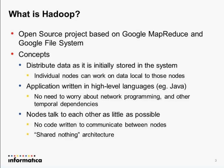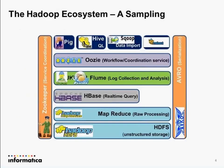Let's look at some of the different flavors of the Hadoop ecosystem. New Hadoop projects crop up periodically on the Apache Foundation website, but here are the more popular ones. At the base layer is HDFS for unstructured storage. On top of that, MapReduce handles raw processing. For real-time querying, there's HBase. For system management like collecting and analyzing log files, you have Chukwa or Flume. For coordinating Hadoop jobs, there's Oozie, and above that are various other flavors for querying.